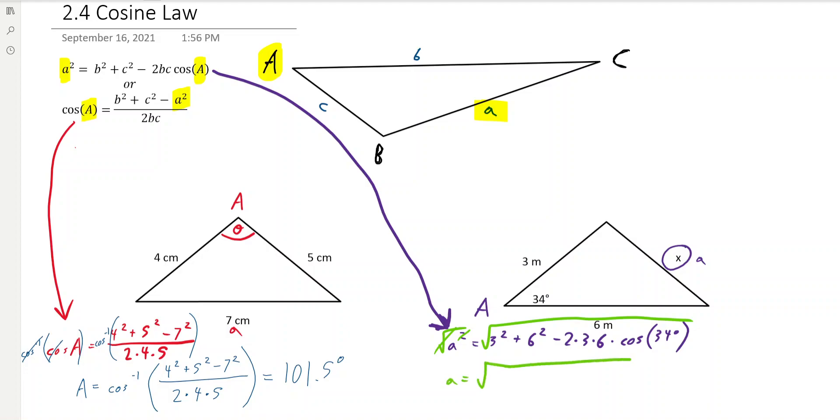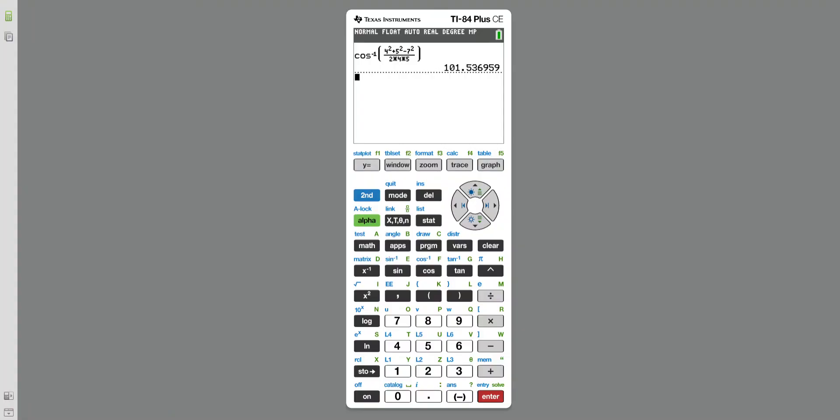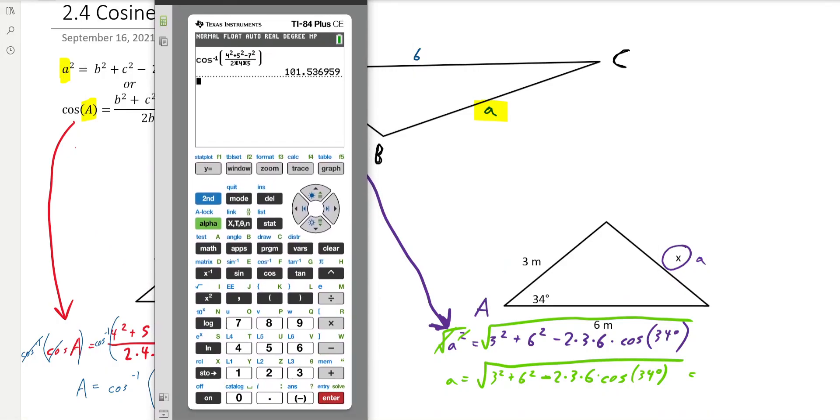So we get A = √(3² + 6² - 2 × 3 × 6 × cos 34°). And that equals - oh, we need to get the calculator out. Not quite that far. Square root, 3² + 6², minus 2 × 3 × 6 times cos 34. Always make sure you end your brackets. Just get in that habit. And press enter, and we get 3.89.